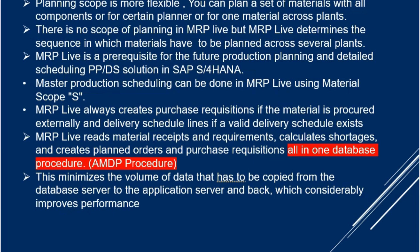A very important thing is that many new products are coming into scope in S/4 HANA — PPDS is one example. MRP Live becomes a prerequisite for these. If you have activated advanced planning, running MRP Live will also help you run PPDS. Additionally, Master Production Scheduling (MPS) can also be done — there is an indicator available on the screen where you can control whether to run MRP or to do exclusive MPS.